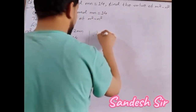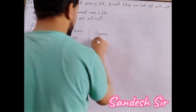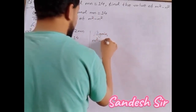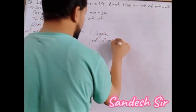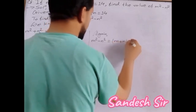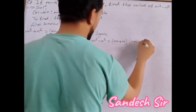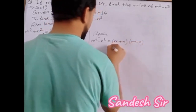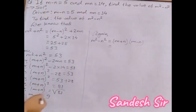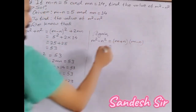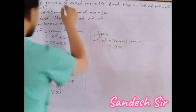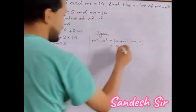Again, m squared minus n squared equals m plus n multiplied with m minus n. Now m plus n is 9, and 9 into m minus n is 5.